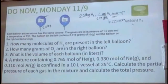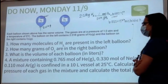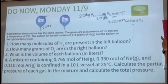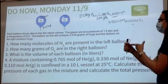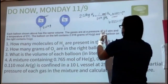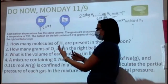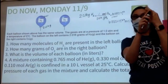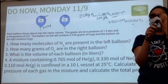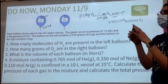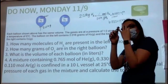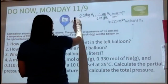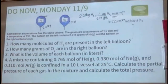For number one, we took the grams of H2 and converted to molecules. Number two asks how many grams of O2 are in the right balloon. Since pressure, volume, and temperature are all the same, N — the number of moles — should also be the same. If P, V, and T are all the same, moles will be the same as well. Note: moles will be the same, not grams.